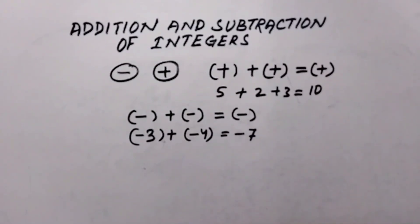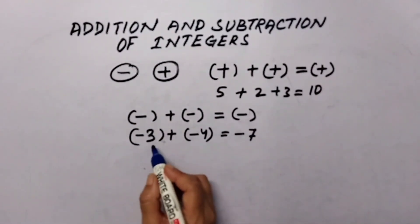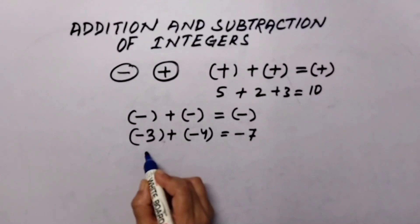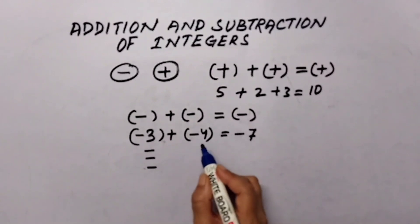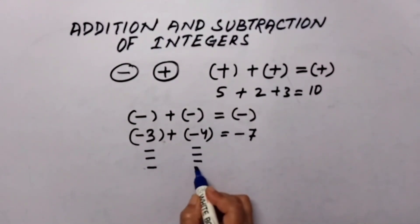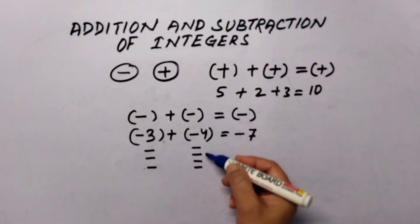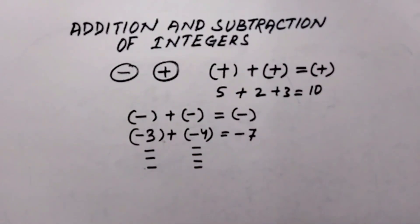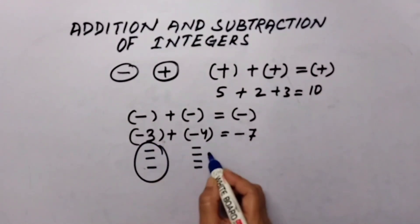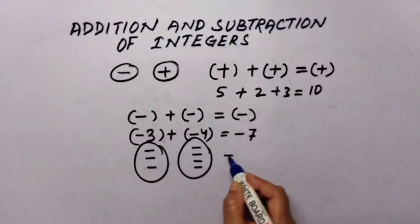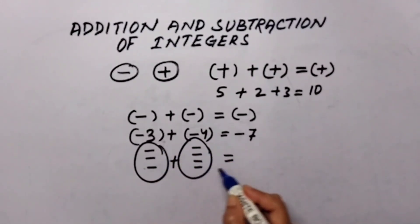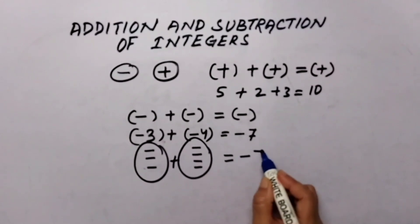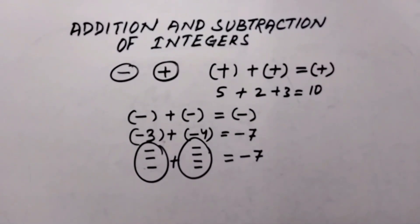Why is it negative? Negative three means three units of negative, and negative four means four units of negative. When we find their sum, we are finding the total number of negative units — negative three and negative four gives negative seven. I think all of you are clear about this.